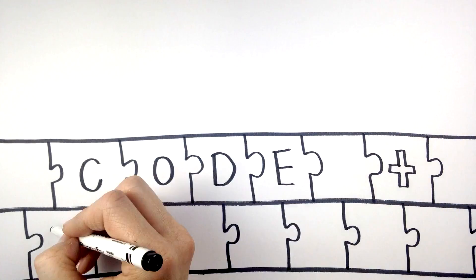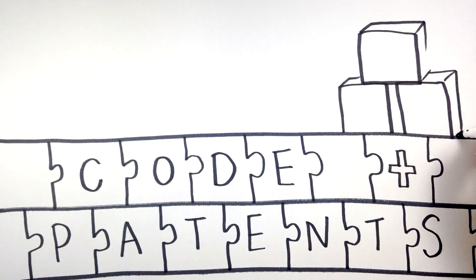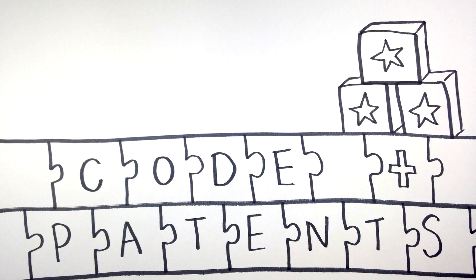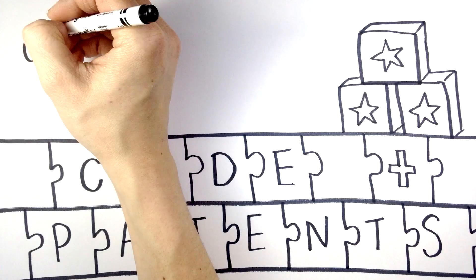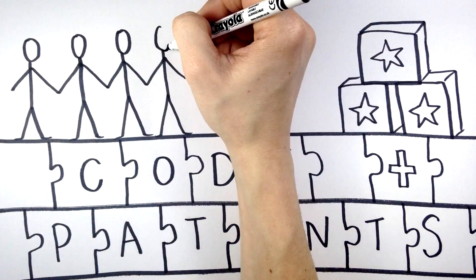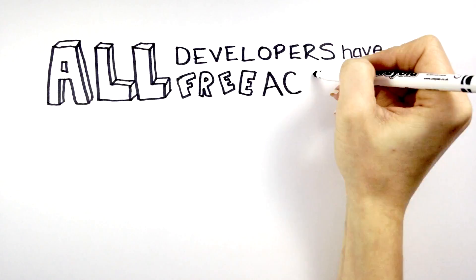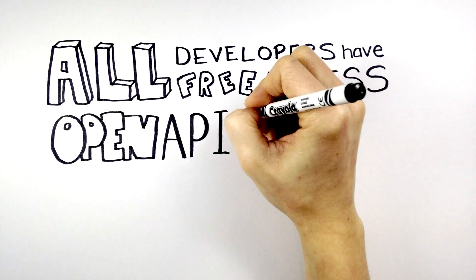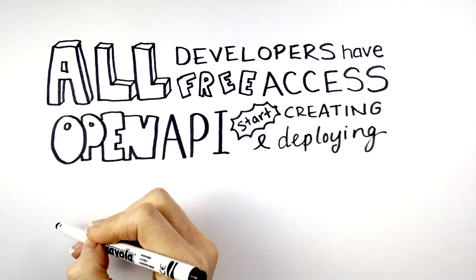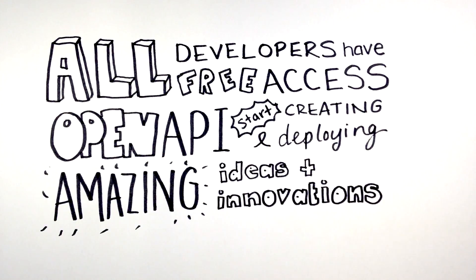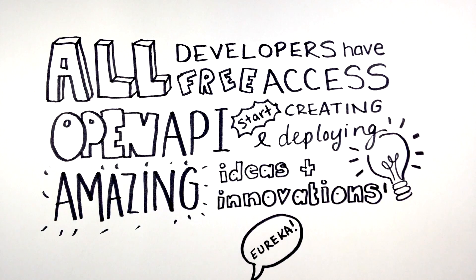Anyone can use the code and patents to build these powerful new products and services at no cost and without fear of the service ever being compromised or stopped. This is a network of equals and ownership belongs to all users all of the time. All developers have free access to an open API and can start creating and deploying amazing ideas and innovations that could change the world right now.